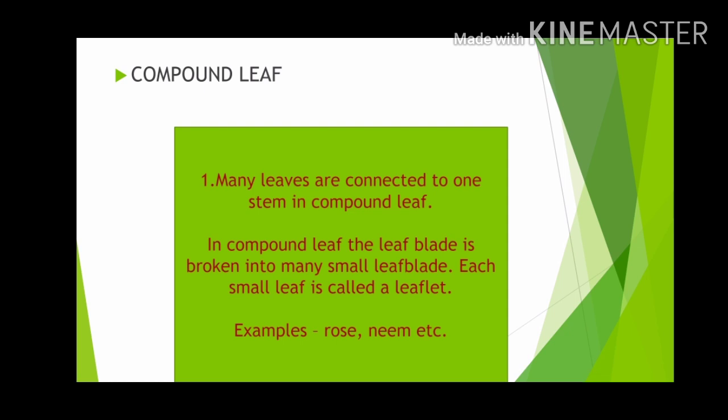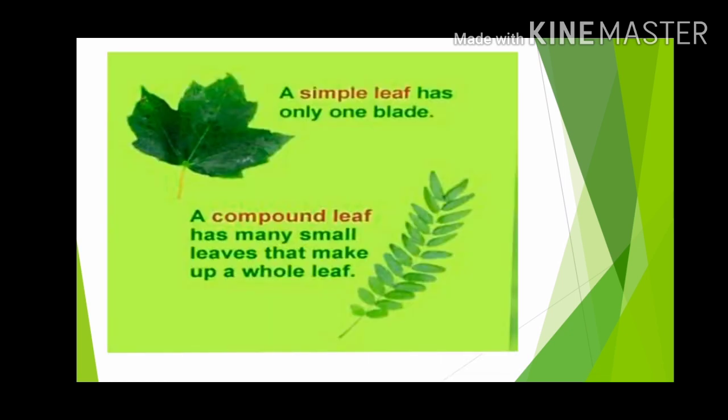In some other plants, many leaves are connected to one stalk. These types of leaves are known as compound leaves. In a compound leaf, the leaf blade is broken into many small leaf blades. Each small leaf is known as a leaflet. Some plants like rose, neem, and palm have compound leaves.